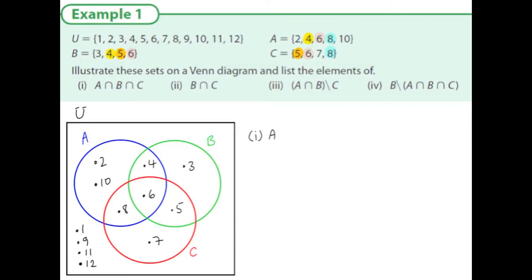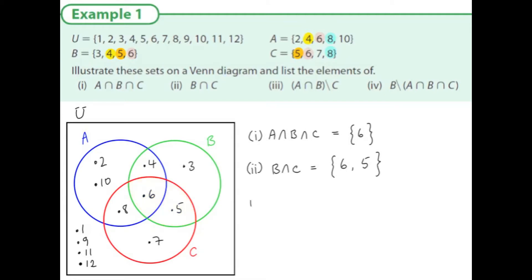Now let's look at the first question: A intersection B intersection C. This is the intersection of all three circles — the very middle of the diagram — and this is the element six. Second question: A intersection C, where the circles A and C intersect. It has the elements six and five. The order doesn't matter.